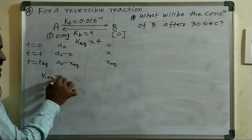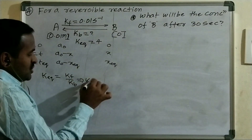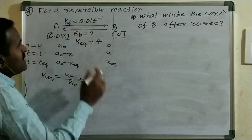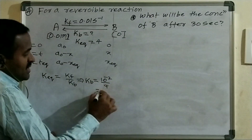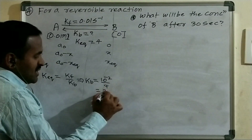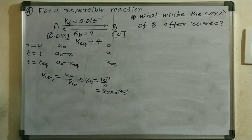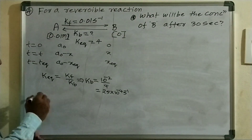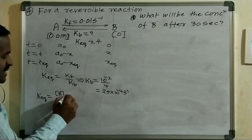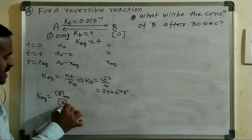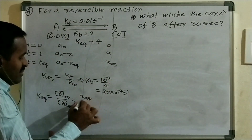K_eq = Kf / Kb, so Kb = Kf / K_eq = 10⁻² / 4 = 0.25×10⁻² = 25×10⁻⁴ s⁻¹. And K_eq = [B]_eq / [A]_eq = X_eq / (A0 − X_eq) = 4.